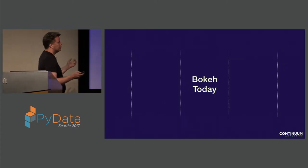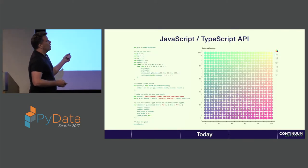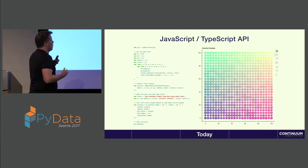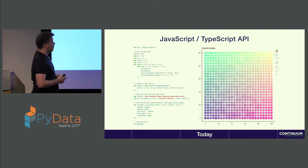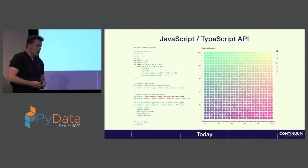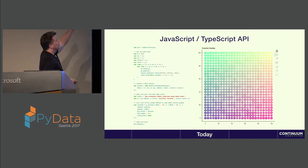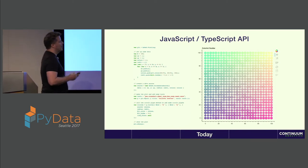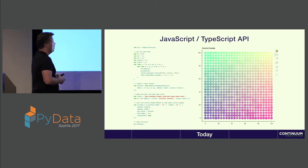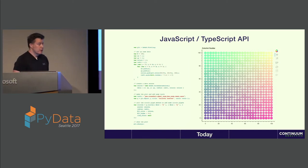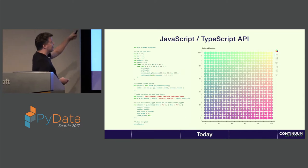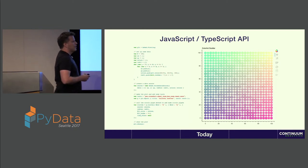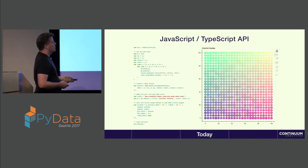So let's look at what Bokeh is today. Ironically, the first thing I want to mention is actually not about Python, even though we're at PyData. Bokeh has recently added a more formal JavaScript — really TypeScript — interface. We're actually in the process of porting the entire Bokeh.js library to TypeScript. That's going to be really good for long-term maintenance of Bokeh. There's also now a TypeScript API that you can use Bokeh.js as a standalone JavaScript library to generate visualizations. The code is actually not very different from the Python code, which is nice.